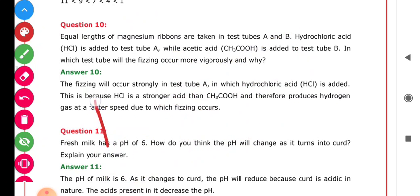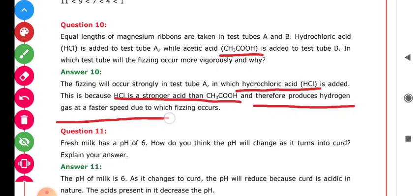As we know students, the stronger the acid, the more vigorous the reaction is. CH3COOH is a very weak acid and it is a natural acid sometimes present in vegetables, foods, or vinegar. That is why it is not producing the fizzing sound. So the remaining acid, which is HCl (hydrochloric acid), will have more fizzing. This is because HCl is a stronger acid than CH3COOH, and therefore it produces hydrogen gas at a faster speed, due to which fizzing occurs.